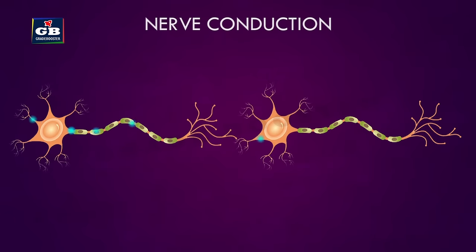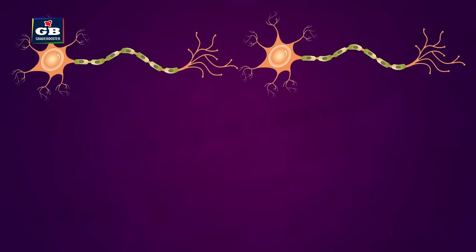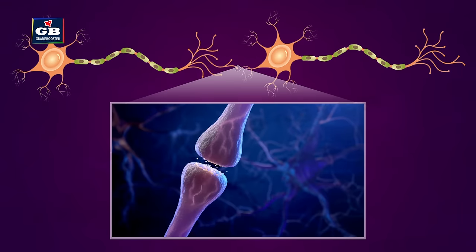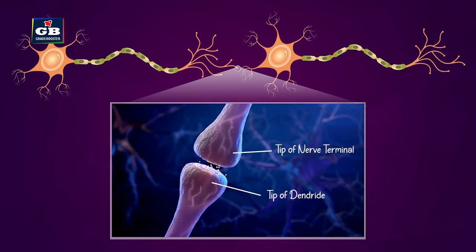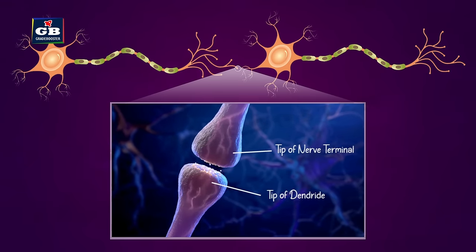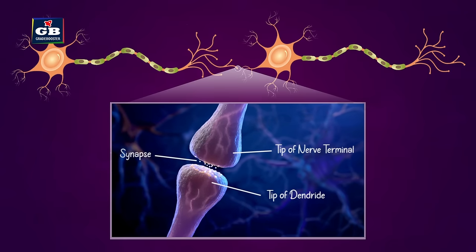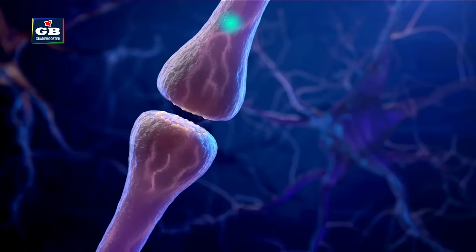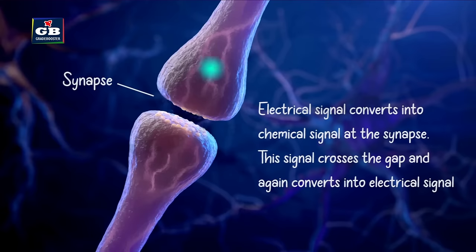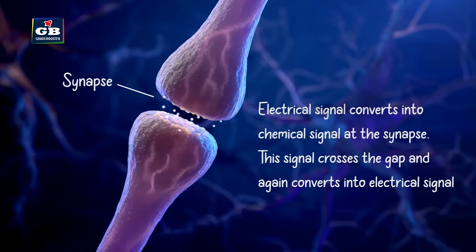Neurons collect nerve impulses through their dendrites and pass them to other neurons via their nerve endings. The nerve endings of one neuron and the dendrites of another neuron are not directly attached — there is a gap between them. This gap or junction is called a synapse.